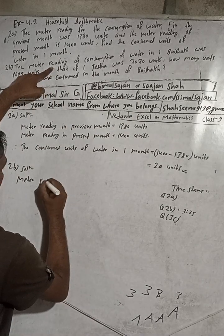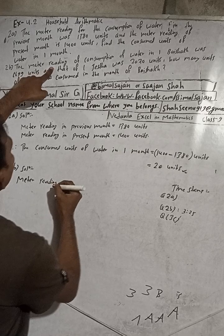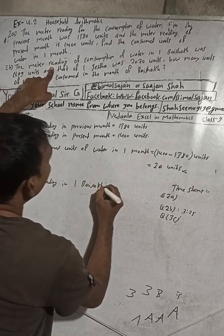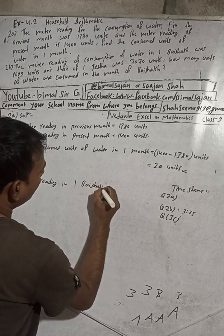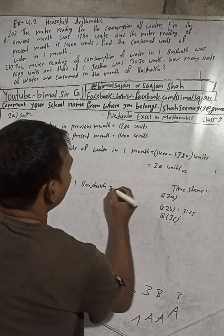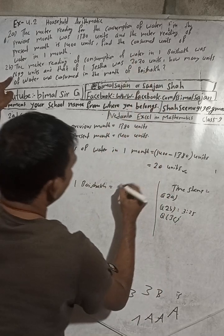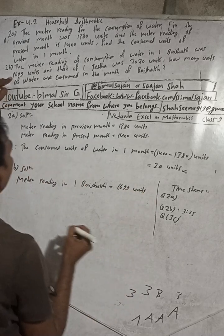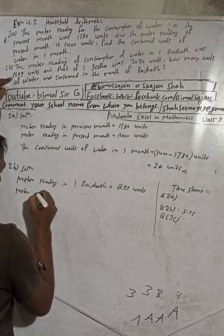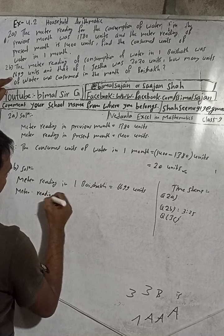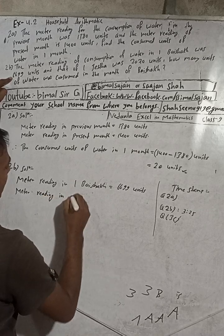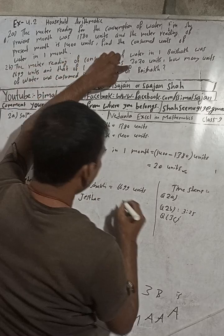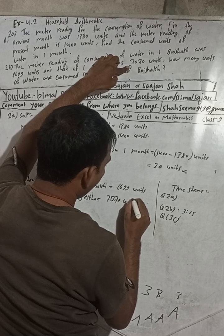Meter reading in first place — Baisakh — was 6699 units, and meter reading in first place — Jestha — is equal to 7070 units.